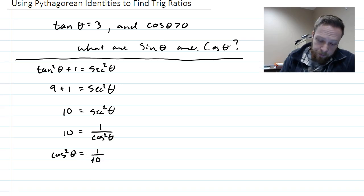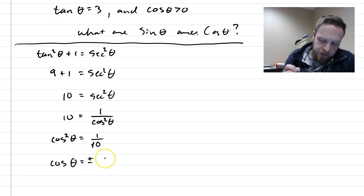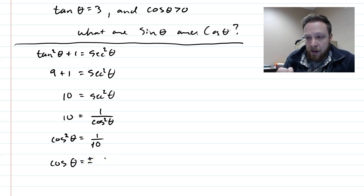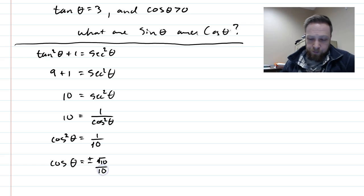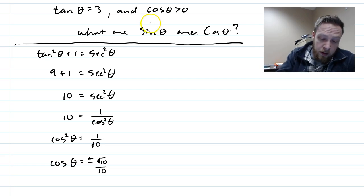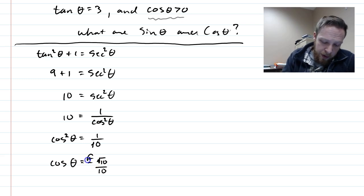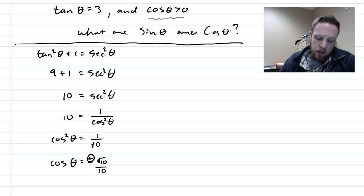Now I almost have cosine of theta — I just need to square root both sides. That gives me plus or minus the square root of one-tenth, which when rationalized is root ten over ten. Now I have to decide if it's positive or negative. Luckily, they told us cosine of theta has to be positive, so cosine of theta equals positive root ten over ten.